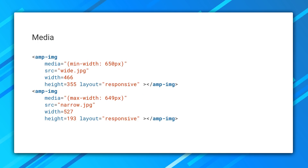Another useful attribute is the media attribute, which brings the power of media queries to HTML instead of CSS. This is especially useful to emulate something like the picture tag in AMP, where you're trying to do art direction and load two different images with different aspect ratios. With the media attribute in place, you can have two images next to each other and control them so that none appears at the same time as the other. It's a nifty feature.